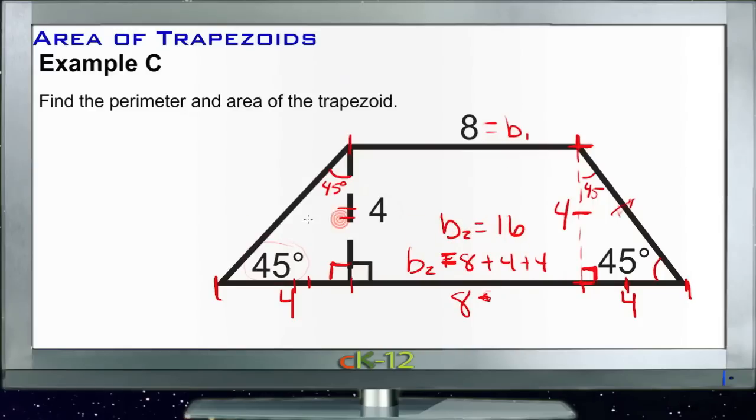So now we got base 1, base 2, and height, so we can calculate our area. Area is base 1 plus base 2 over 2 times h. So we got 8 plus 16, or 24 over 2, that's 12. We got 12 times height which is 4, so that's 48. So our area is 48.